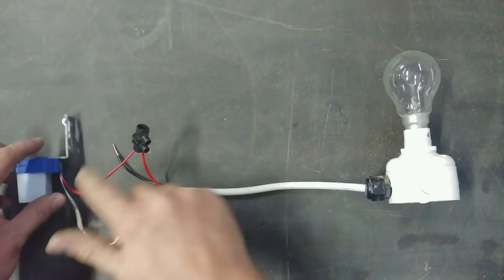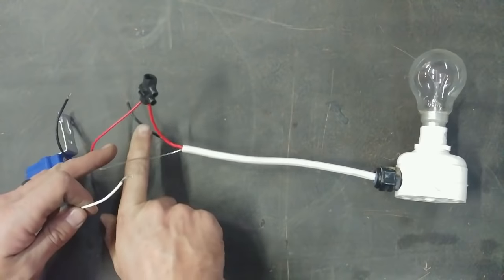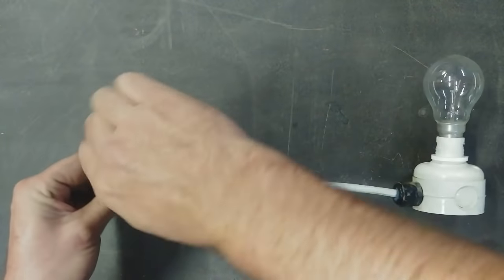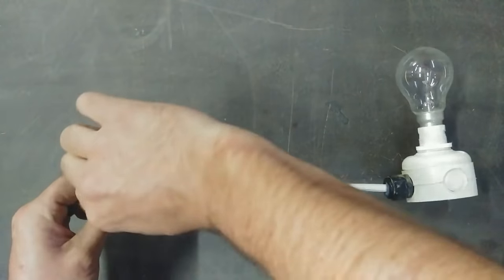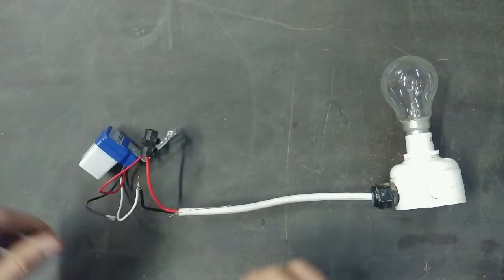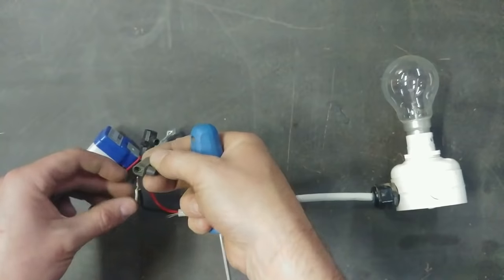Okay, so after connecting the return, I'm going to connect the neutral, which in this case is the white wire. Now you'll see there's a bare wire here, which is called the earth wire.